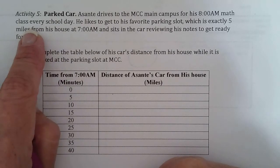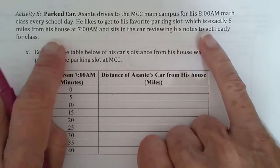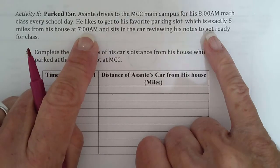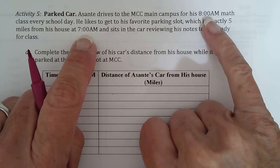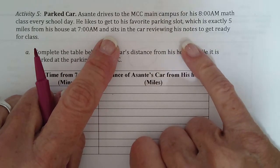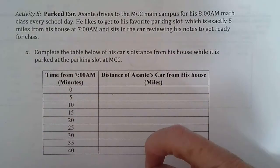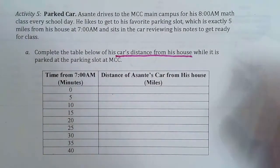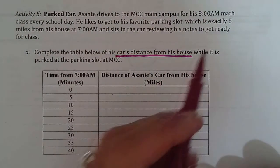So Asante drives to the MCC main campus for his 8 a.m. math class every day. He likes to get his favorite spot, which is exactly 5 miles from his home, or get to his favorite spot at 7 a.m. So he drives 5 miles, parks at 7 a.m., his class is at 8 a.m. And then, just like you guys, he sits in his car reviewing his notes to get ready for class. I bet you guys do that every day, right? Complete the table below of his car's distance from his house. So think about this, his car's distance from his house. So it said his house was 5 miles away.